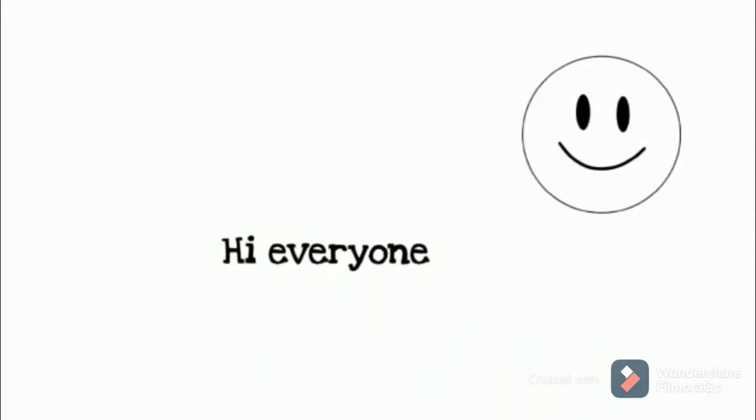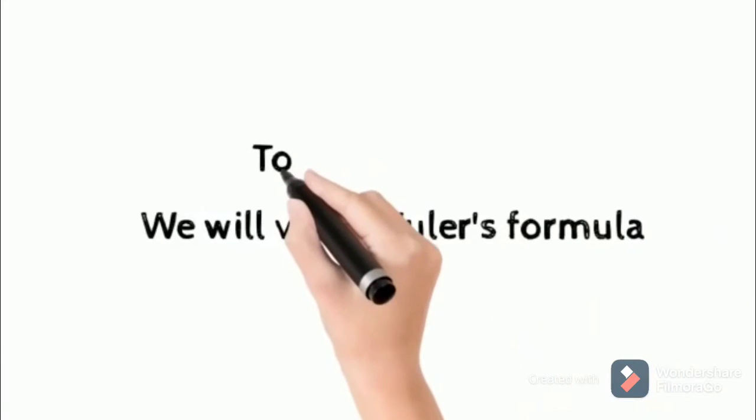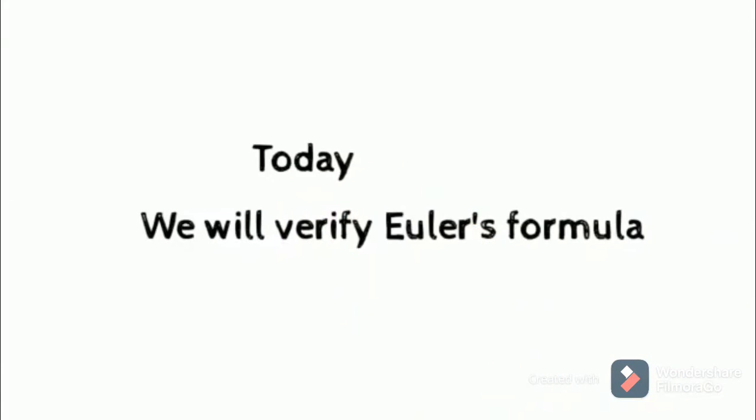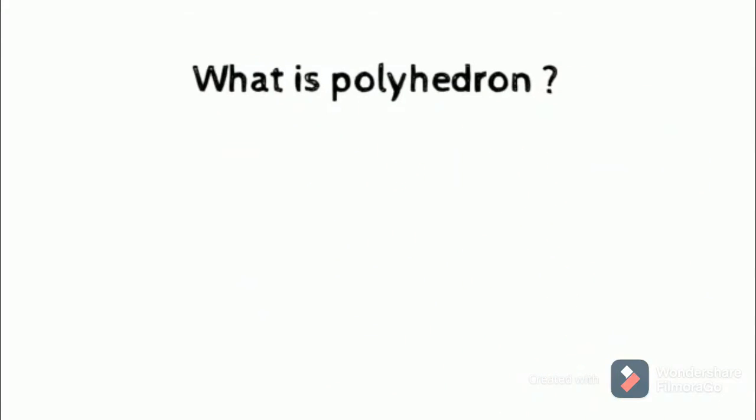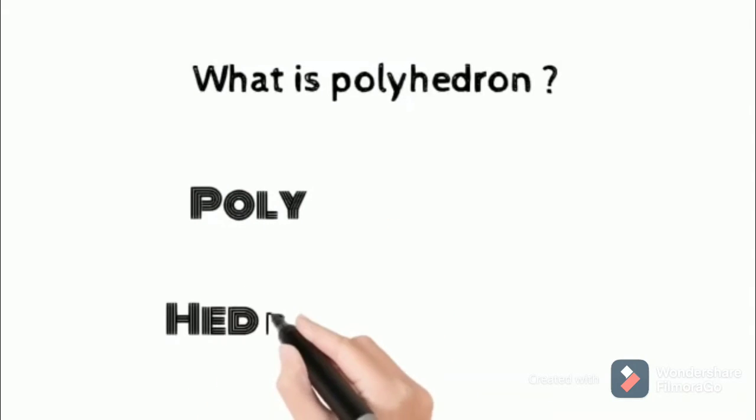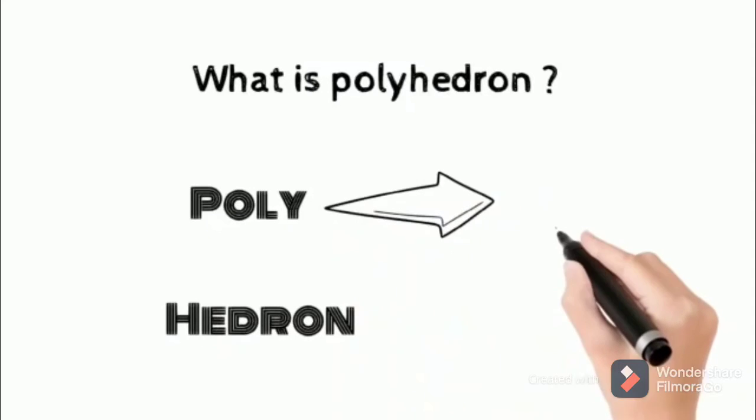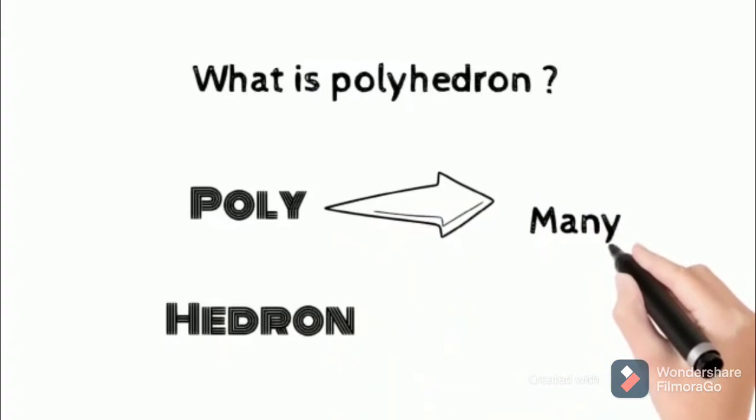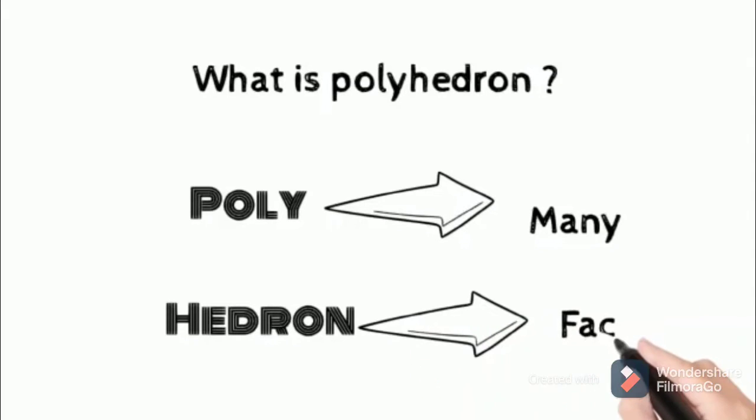Hi everyone, today we will verify Euler's formula. Before going further, let's see what is a polyhedron. Poly means many, hedrons means many faces, so a solid shape that has many faces is known as a polyhedron.